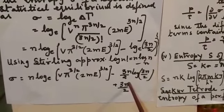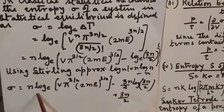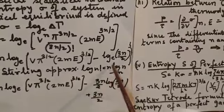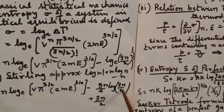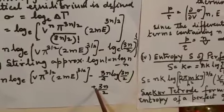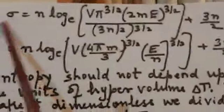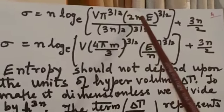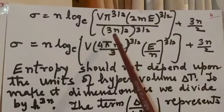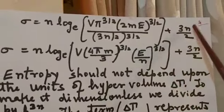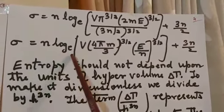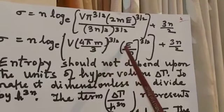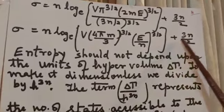Applying Stirling's approximation to the factorial term, sigma = N log[V * pi^(3/2) * (2mE)^(3/2)] minus (3N/2) log(3N/2) plus 3N/2. Simplifying, sigma = N log[V * (4 pi m / 3)^(3/2) * (E/N)^(3/2)] + 3N/2.